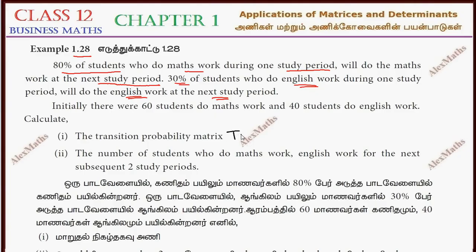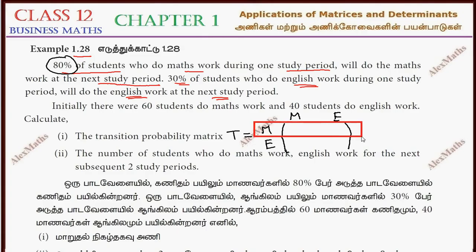So the transition probability matrix T is being set up. The question states 80% of the students who do max work will continue max work at the next study period. So that is 80 divided by 100, which is 0.8, and the balance goes to English, so 1 minus 0.8 equals 0.2.